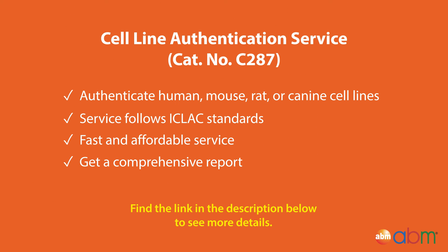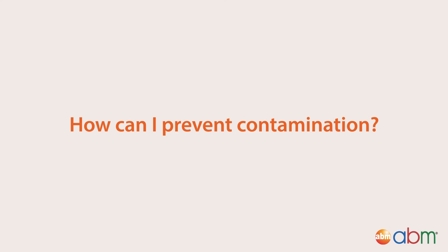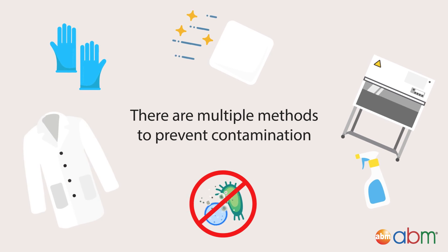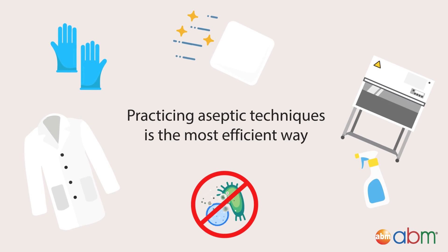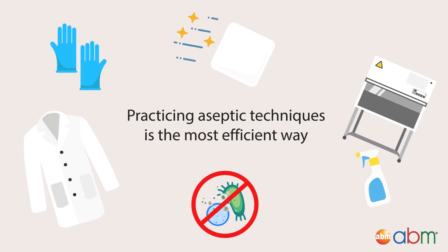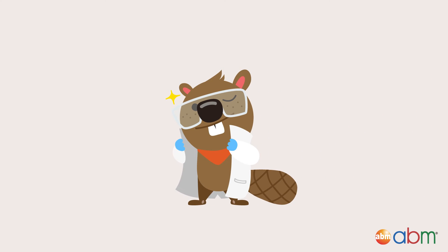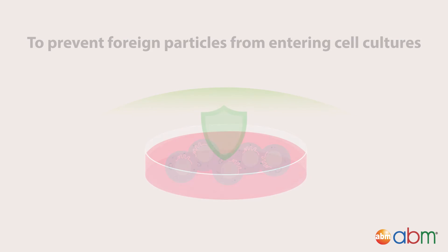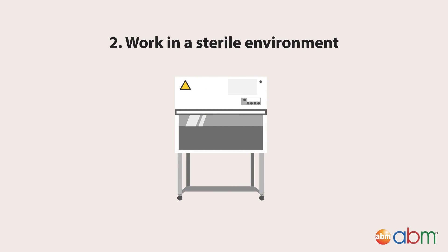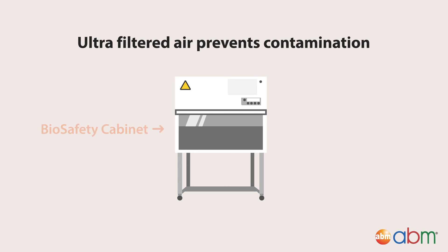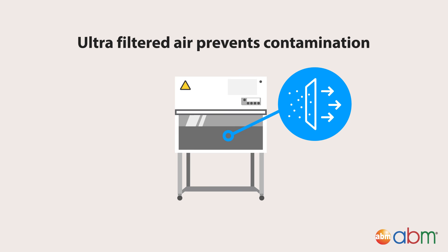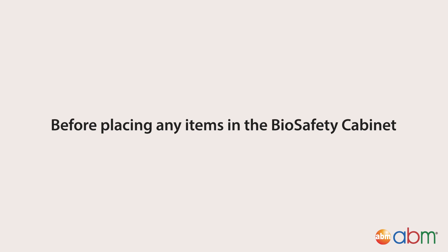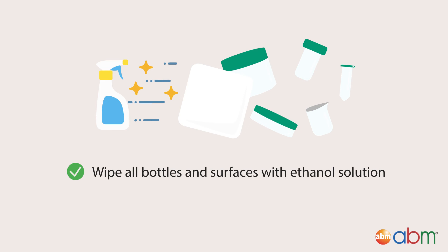ABM offers comprehensive STR profiling to help you ensure you are working with the correct cell line. With all this talk about contamination, there are actually multiple methods that scientists can utilize to prevent contamination from occurring in the first place. Practicing aseptic techniques in the lab is one of the most efficient ways of preventing contamination. Examples include wearing proper PPE so that foreign particles on your skin or clothes will not make it into the cell culture plate. It is also important to work in a sterile environment like a biosafety cabinet, which is a laminar flow unit that contains ultra-filtered air that prevents foreign substances from entering the work environment. Before placing any items in the biosafety cabinet, it is essential to wipe all bottles and surfaces with an ethanol solution to effectively eliminate any microbes.